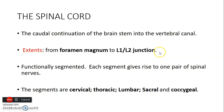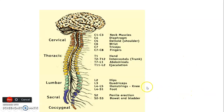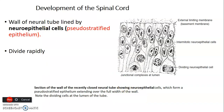The spinal cord is the caudal continuation of the brain stem, extending from the foramen magnum to L1–L2. It is functionally segmented, with a pair of spinal nerves from each segment. The segments are cervical, thoracic, lumbar, sacral, and coccygeal. There are eight cervical segments because the first nerve exits above the first cervical vertebra, giving eight nerves from seven cervical vertebrae. There are 12 thoracic, 5 lumbar, and 5 sacral segments.